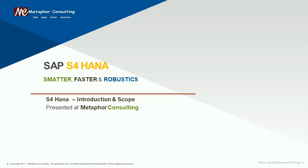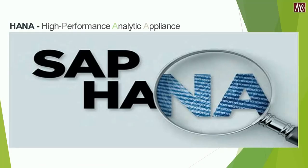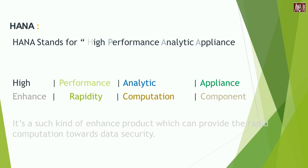Let's start with HANA first. The full form of HANA is High Performance Analytic Appliance. These four alphabets H, A, N, A indicate their own identical activities. High implies to enhance, performance relates to rapidity, analytics refers to computation, and finally A stands for data security. So the meaning of HANA is an enhanced product which can provide rapid computation towards data security.